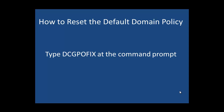But let's assume that for some reason that was done — we actually edited the default domain policy and there was an error, and we need to get the default domain policy back to the default settings. Now of course we could simply back up that policy and then restore it if needs be. But we also have the option of running a simple command at the command line prompt, and that command is DCGPOFIX. That is going to restore the default domain policy for GPOs. Let's take a look and see how it is done.